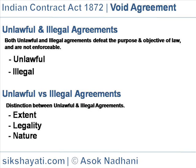Example: L lends money to B to purchase some prohibited goods from T, an alien enemy. The agreement between B and T is illegal. Consequently, the agreement between B and L shall also become illegal, being collateral to the main transaction which is illegal. L cannot therefore recover the amount.